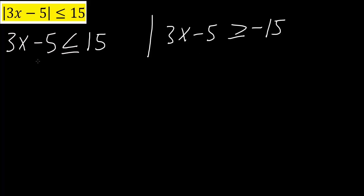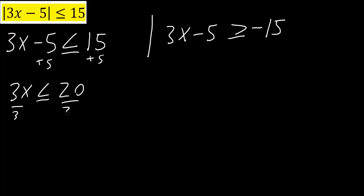Now we will add 5 to both sides. We get that 3x is less than or equal to 20. Then we divide by 3, and x is less than or equal to 20 over 3. So this is one answer.